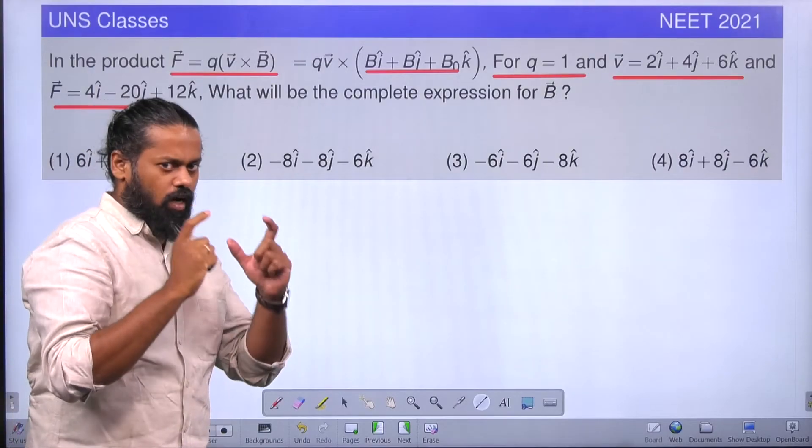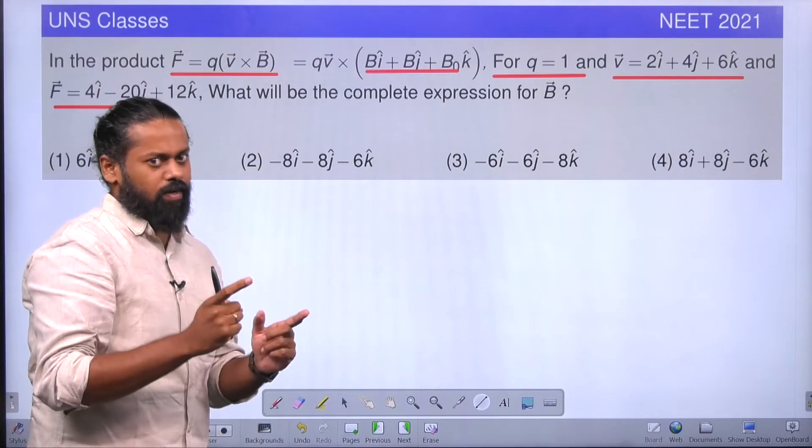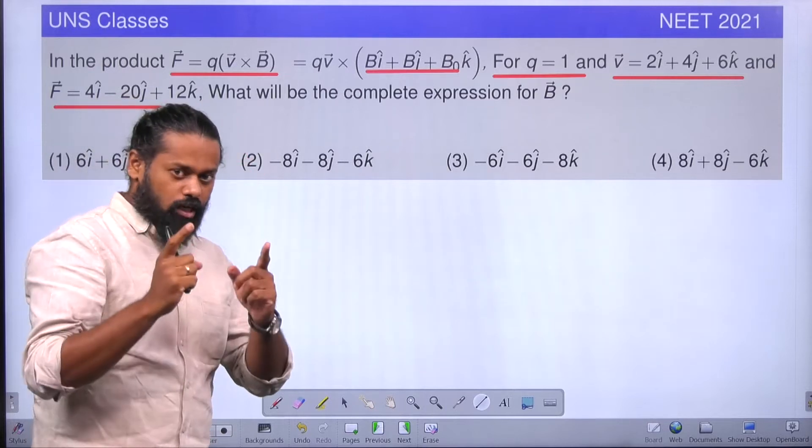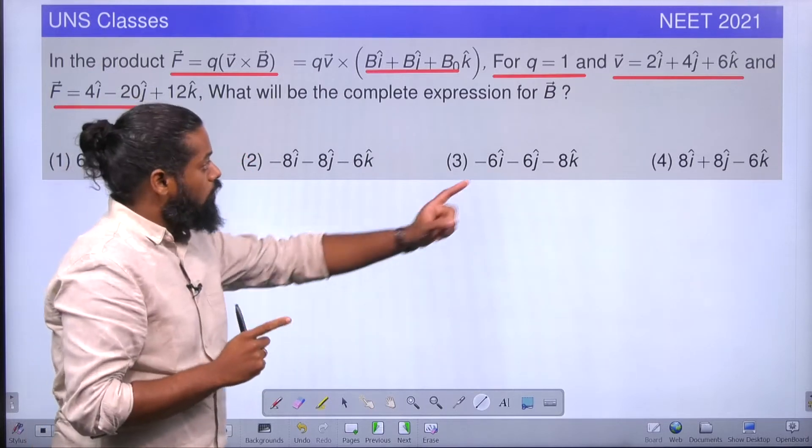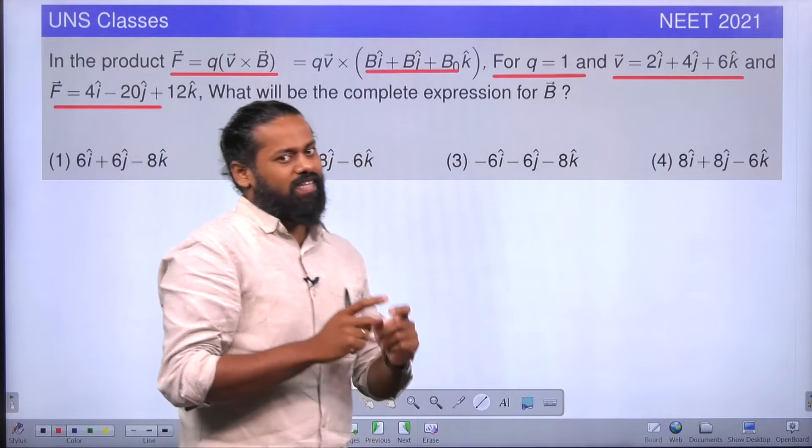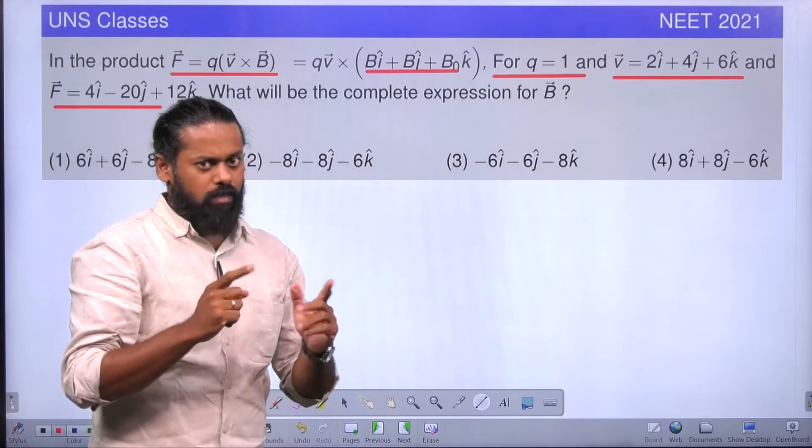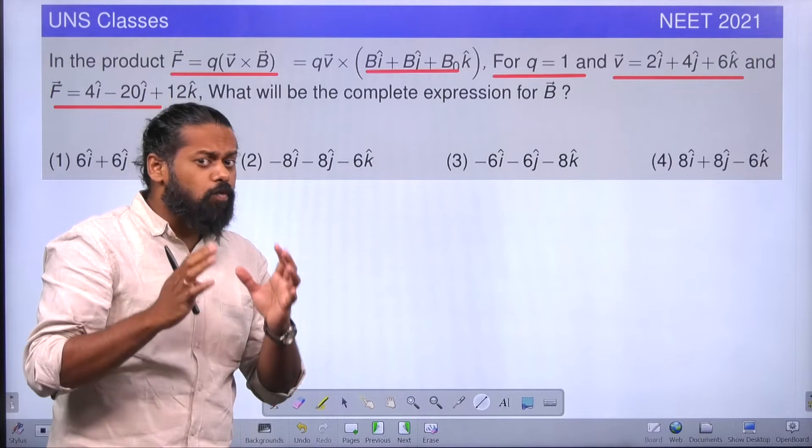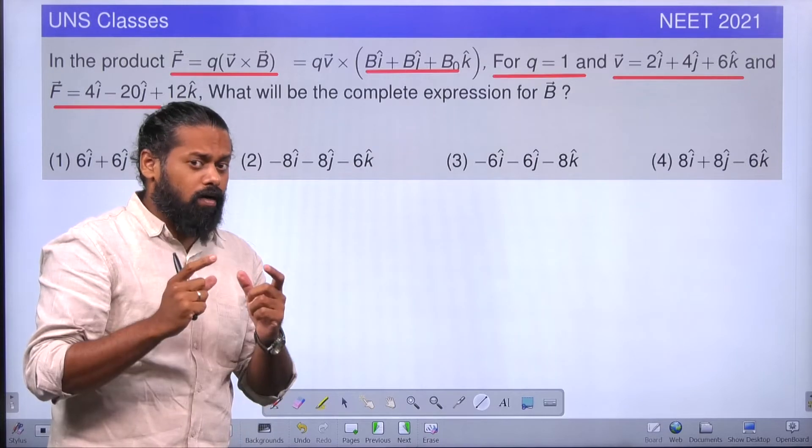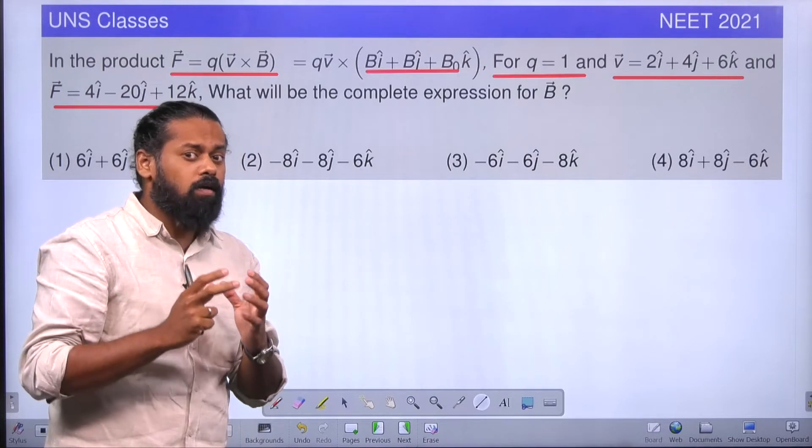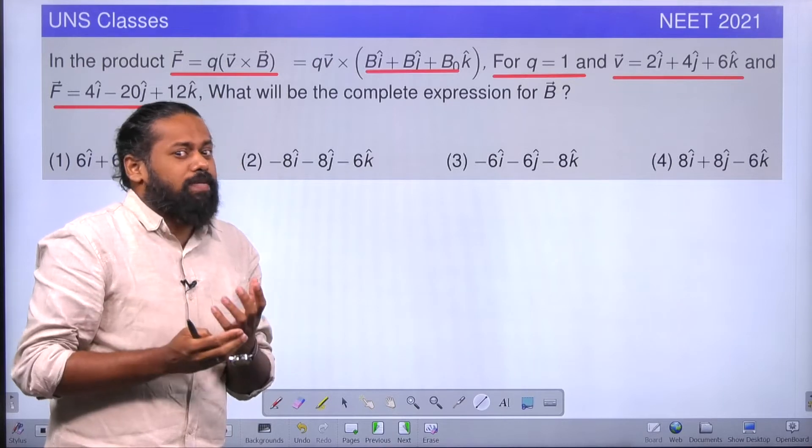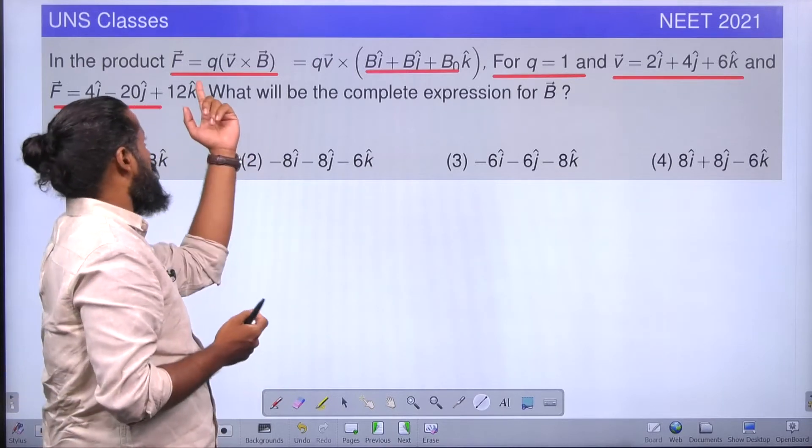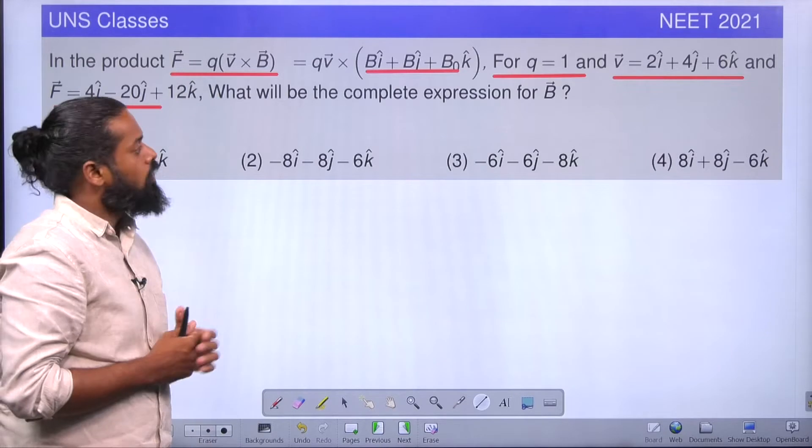We are placing a charged particle in a magnetic field. The moving charged particle has a velocity of 2i + 4j + 6k units and the charge is 1 unit. If that is the case, you know that a force will be acting on a moving charged particle kept in a magnetic field. That force is given by q into v cross B.